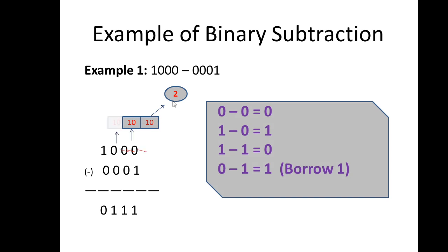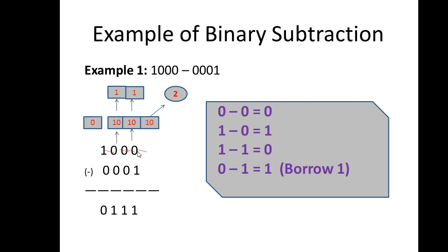Let's take an example. We have to subtract 0001 from 1000. Write 1000 first, then below it write 0001. As you know, we always start subtraction from the rightmost digit, so in the first step we have to subtract 1 from 0.